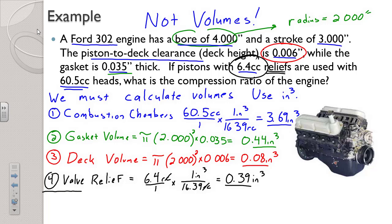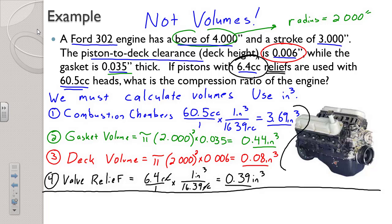Now we can add those four up — those are our four small volumes. Taking our calculator: 3.69 plus 0.44 plus 0.08 plus 0.39. If we add those up, we get 4.6 cubic inches. That is our clearance volume.